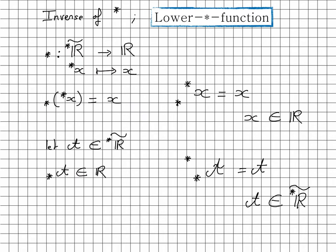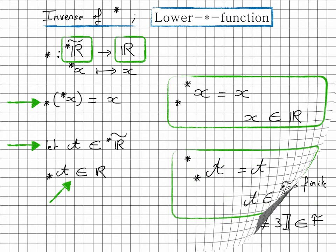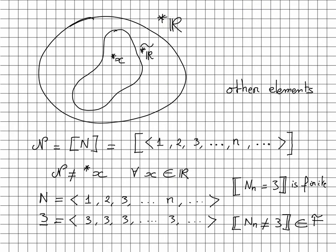It is useful to define the inverse of the star function — we call it the lower-star function — taking elements in star-R-tilde and giving us real numbers, so that the lower-star function acting on star-x equals x. If A is an element of star-R-tilde, then the lower-star function acting on A gives a real number. Of course, in star-R we also have other elements which are not in this special set.